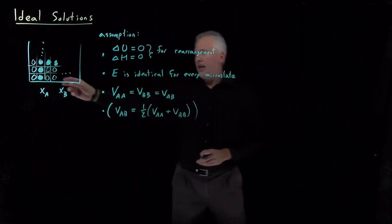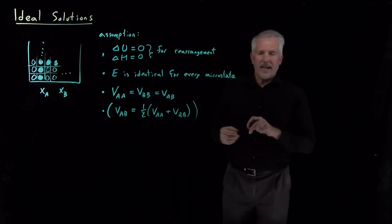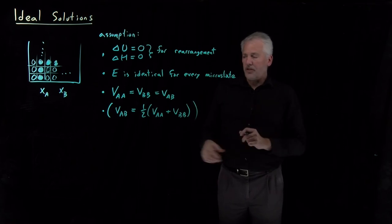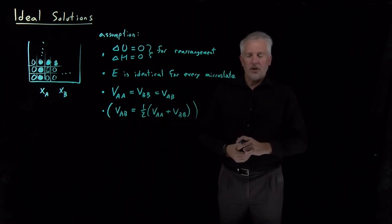the reason behind that is if I pick up a molecule and I exchange it with another one, I'm going to gain as many of one type of interactions as I lose of others. So it turns out that this is also just as good a requirement.